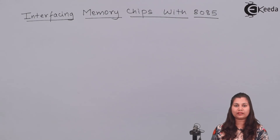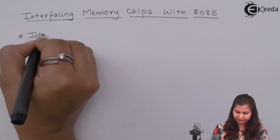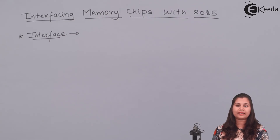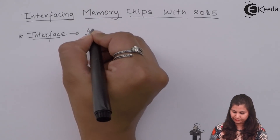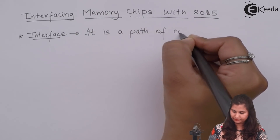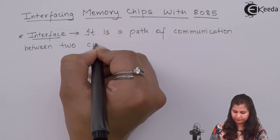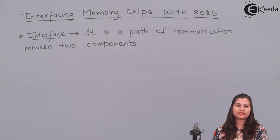Before starting with our topic, let us first understand the meaning of the word 'interface.' Interface means it is a path of communication between two components. So whenever two components want to communicate with each other, the path which provides that communication is called the interface.